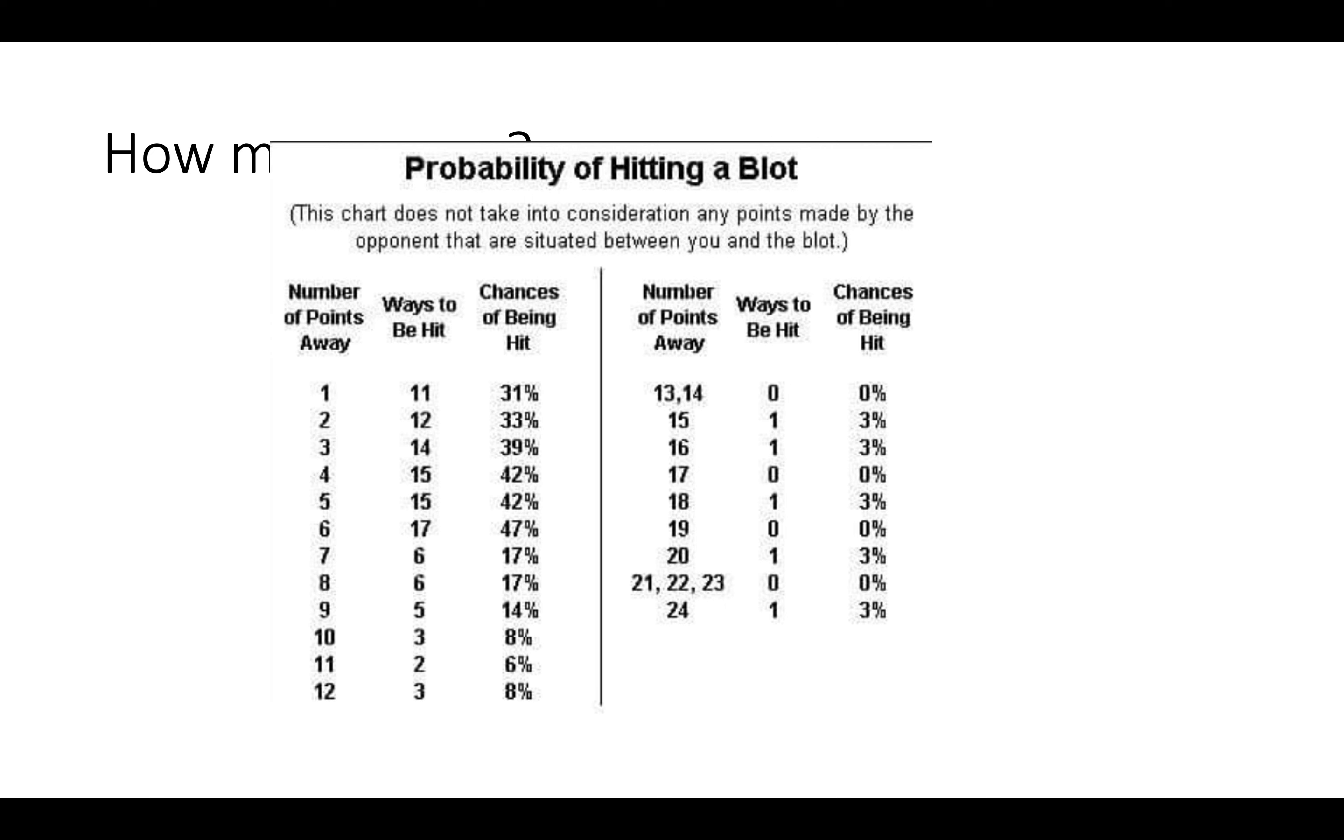You can see how two points away would be 12 ways to be hit, three is 14, four is 15, and so on. So it is quite useful to remember these numbers as best as you can, particularly for direct shots from one to six. Usually to be closer is safer than being further away. That's a rule of thumb.